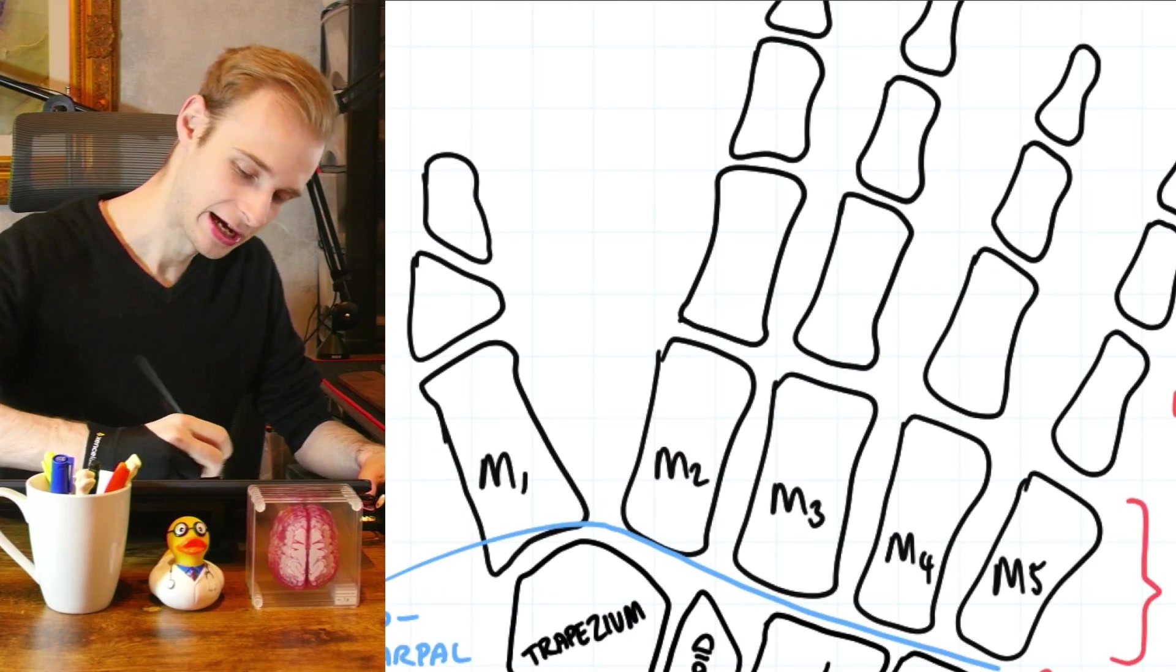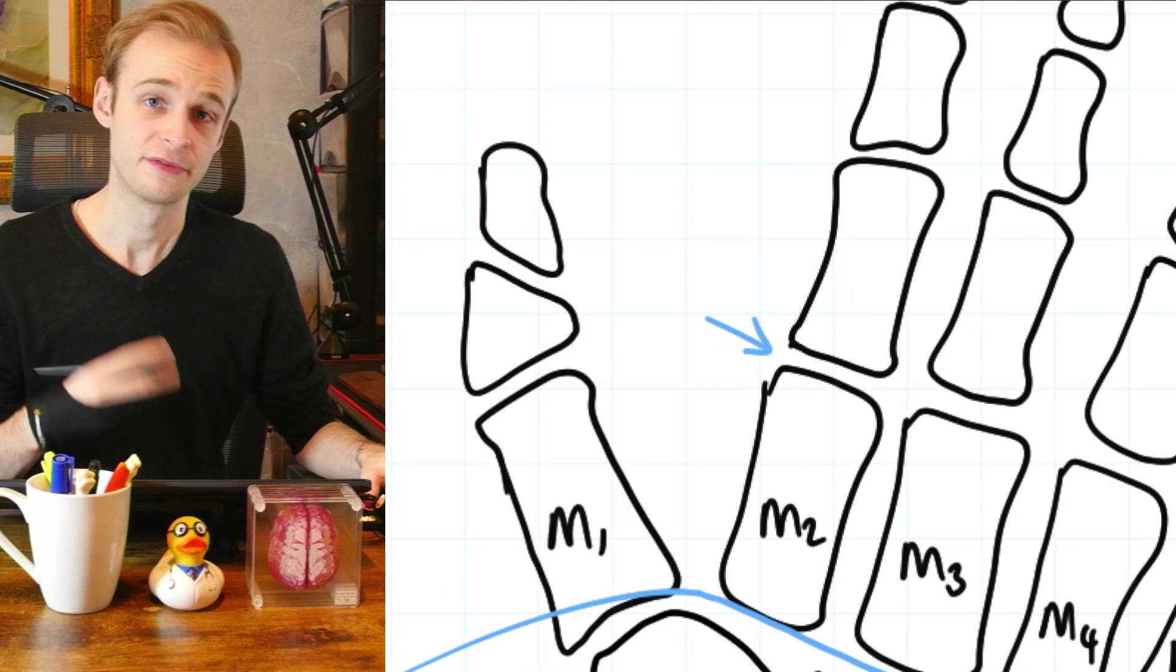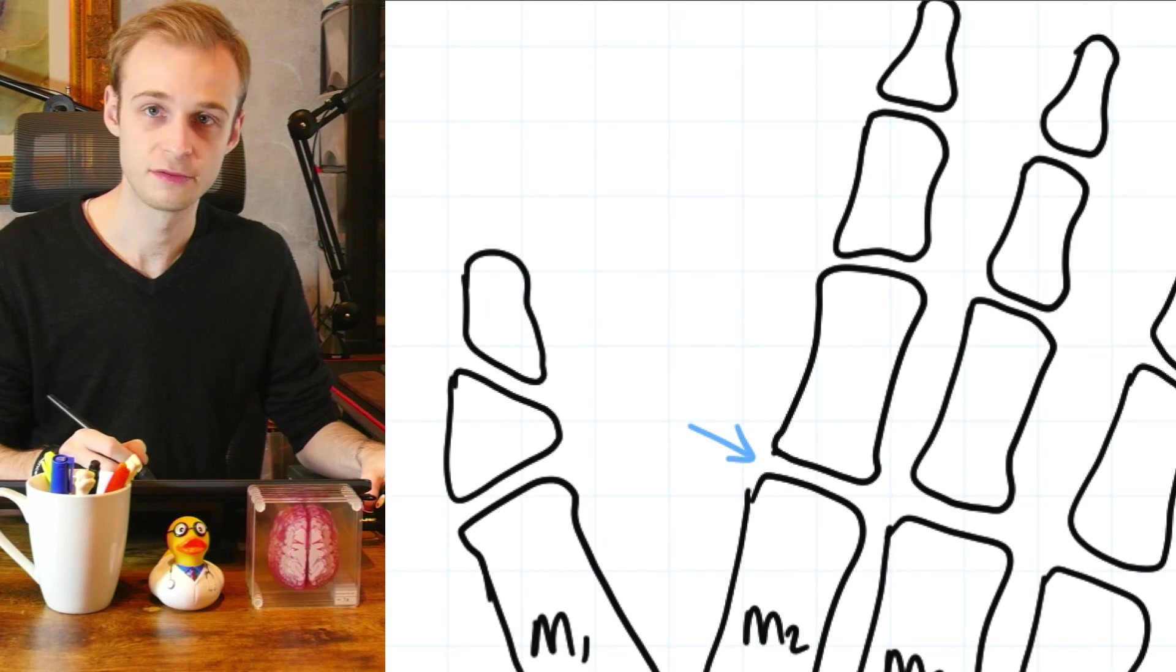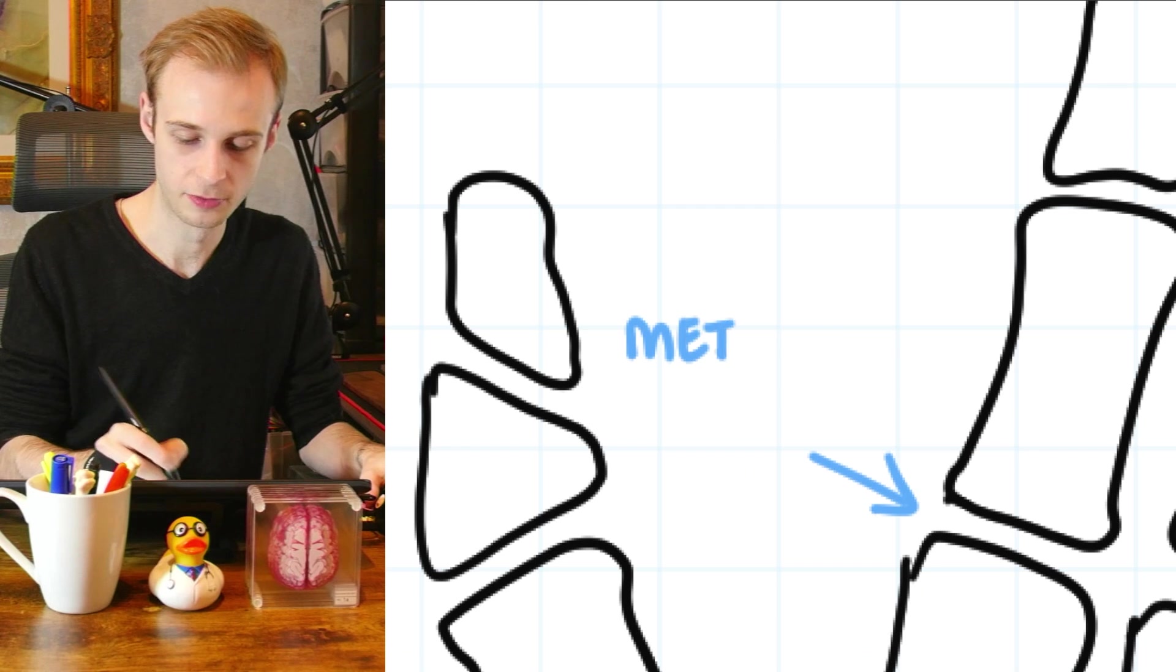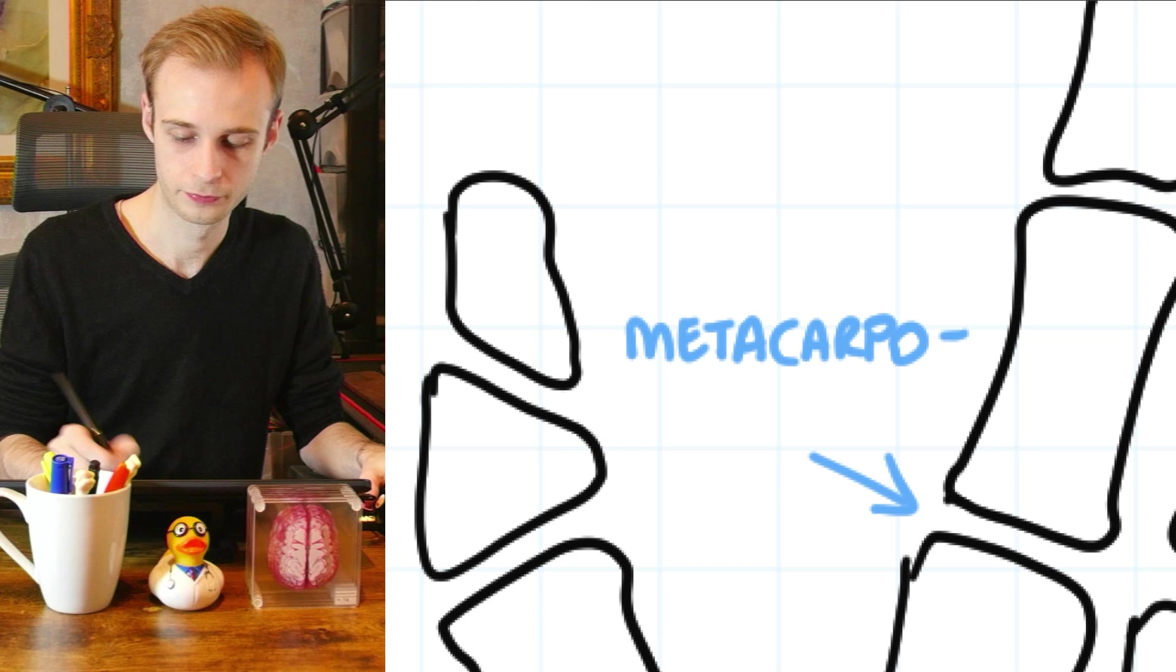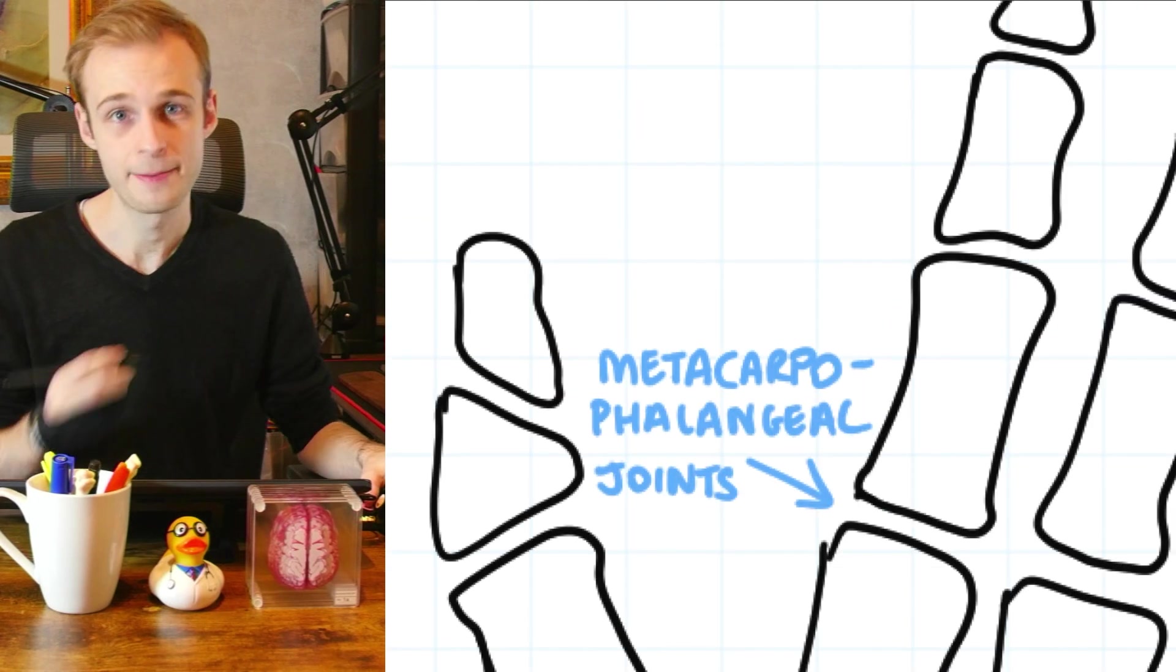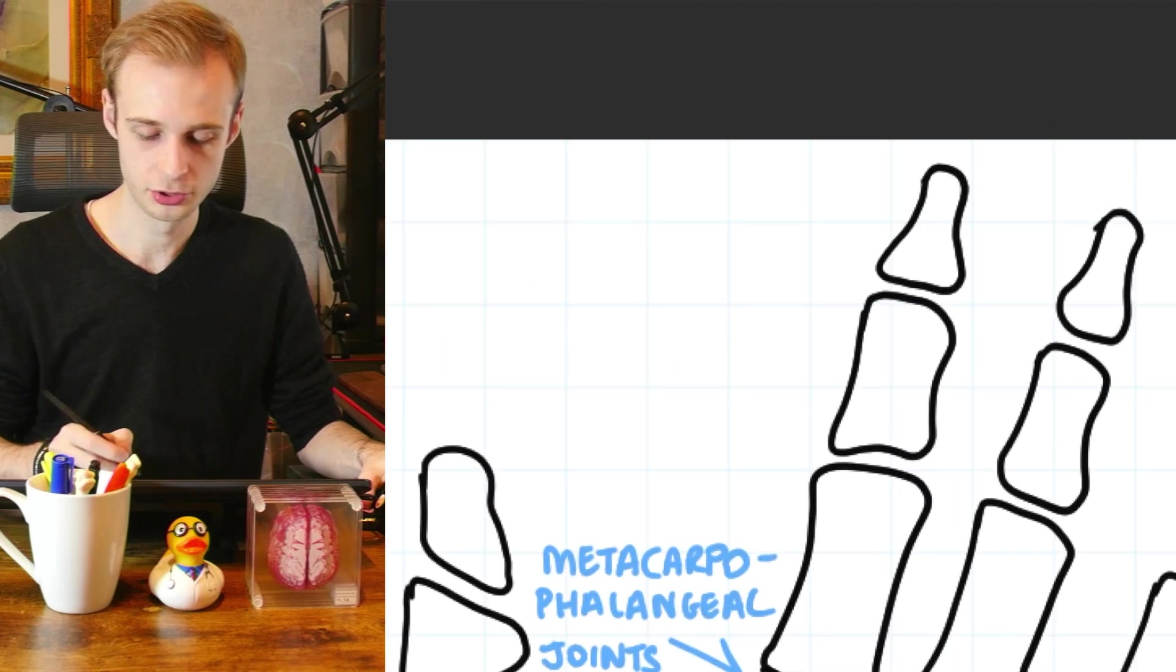We're getting there, I promise you. So how about this one? We have the metacarpal bones in the most proximal aspect, meeting the phalanges. So just as before, we call these the metacarpophalangeal joints, or the MCP joint for short.